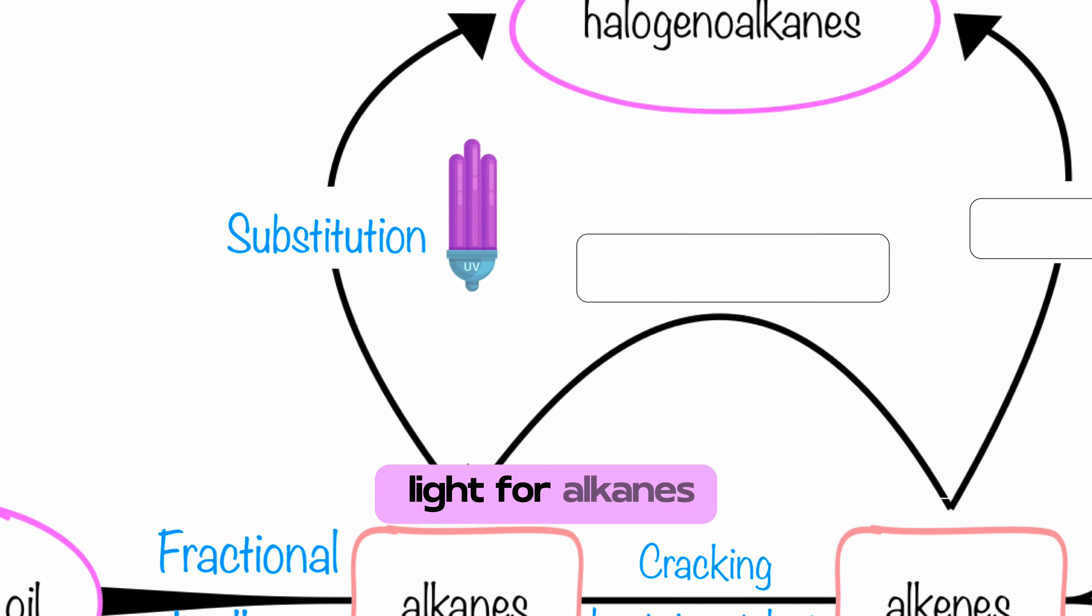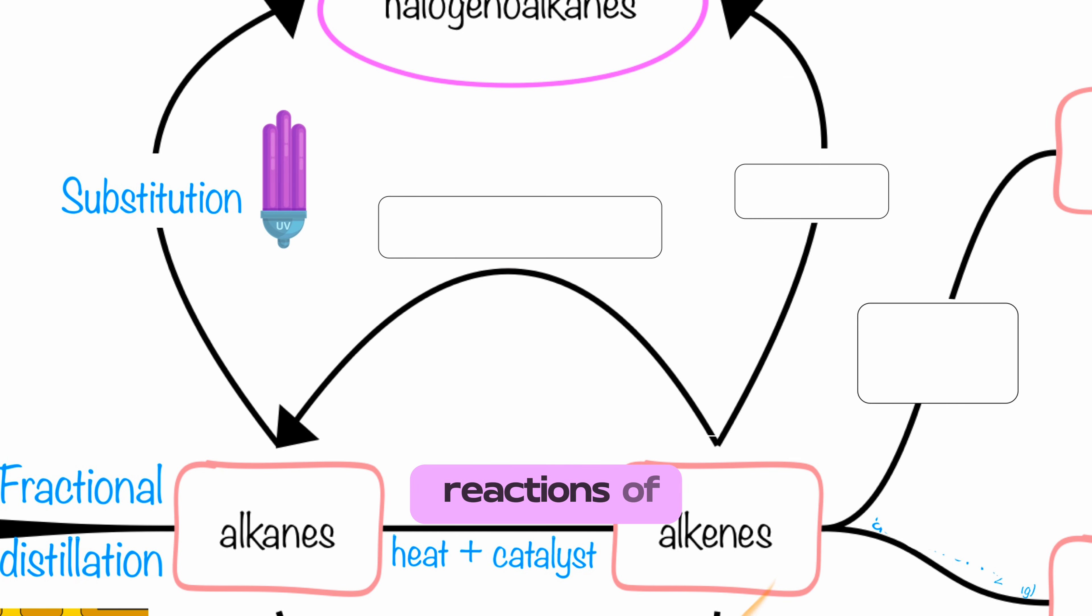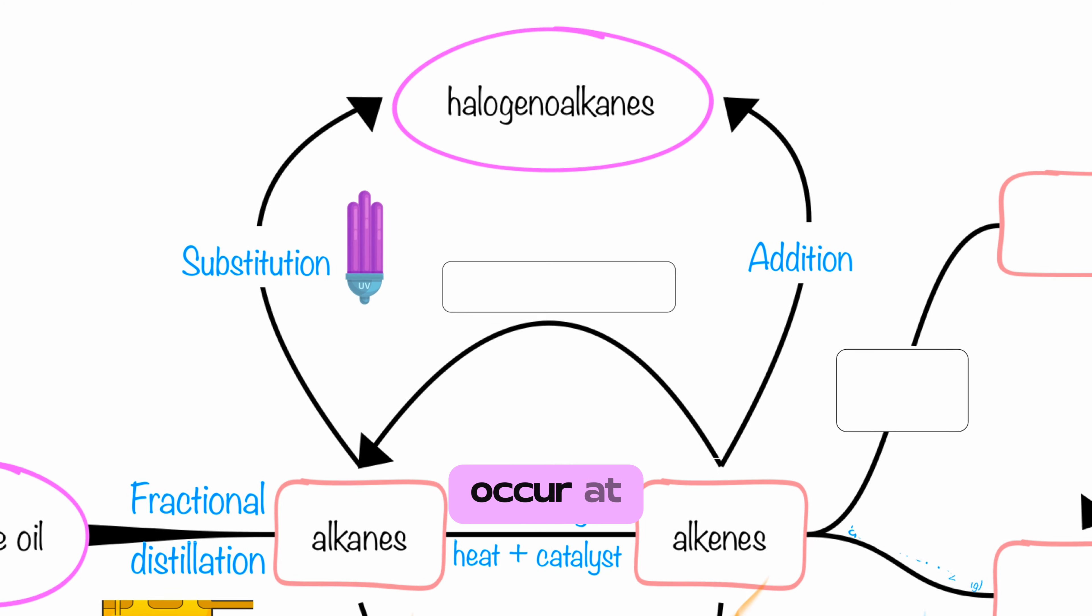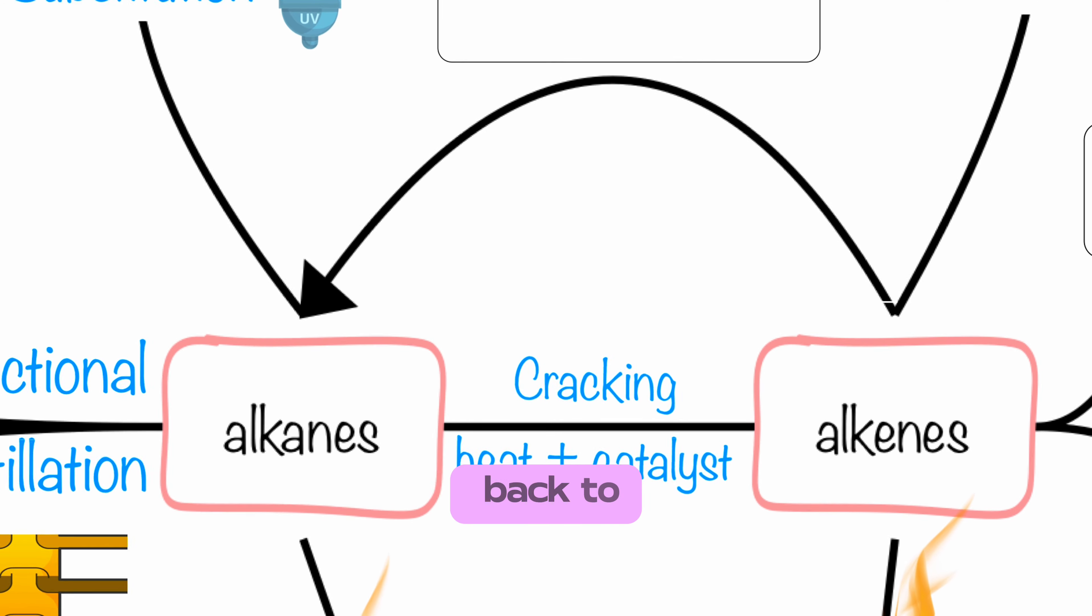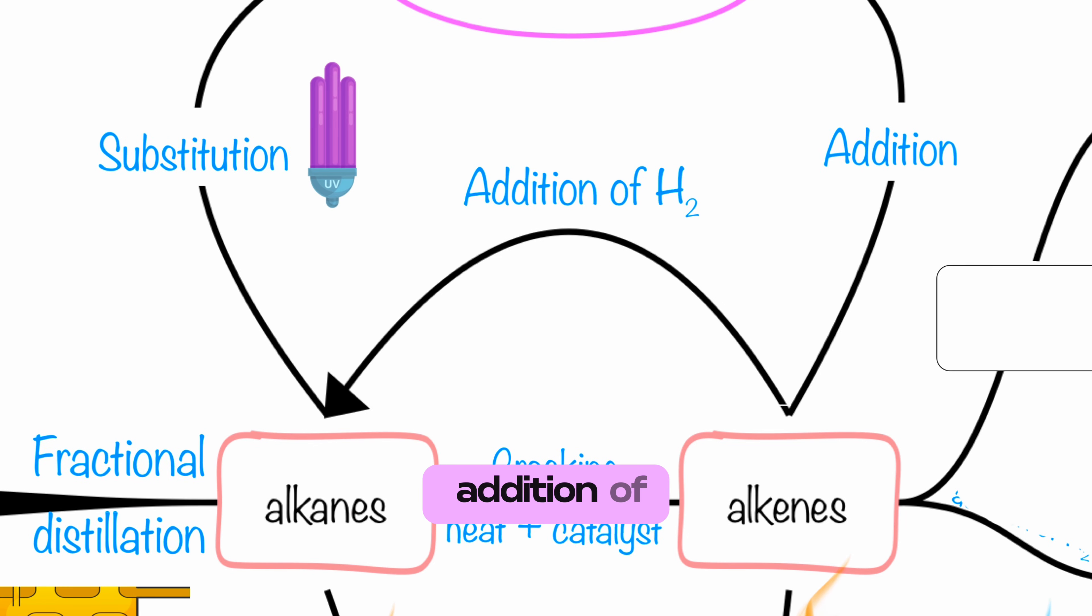Substitution reactions require UV light for alkanes in addition reactions of alkenes that occur at room temperature and pressure. Alkenes can be converted back to alkanes by the addition of hydrogen.